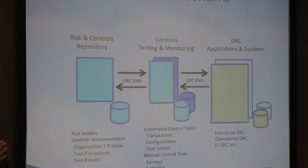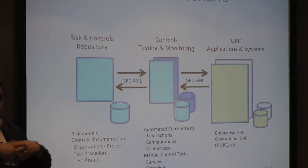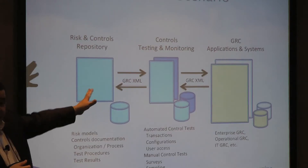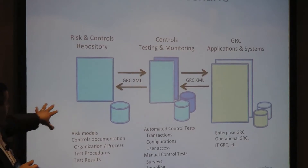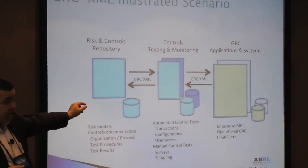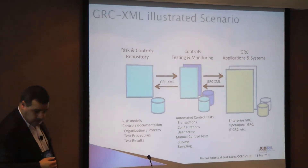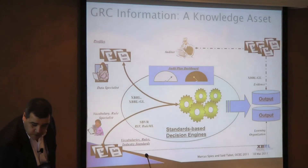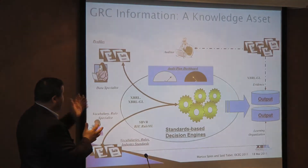This was a real working prototype. We worked with a tool provided by Paisley — now Thomson Reuters — which focuses on documenting controls and risks for auditing purposes. Another company provided an environment to monitor tests of the controls themselves. This illustrates how the system worked: repository tools that can do continuous monitoring in the middle, and then other applications or services that can take advantage of that.